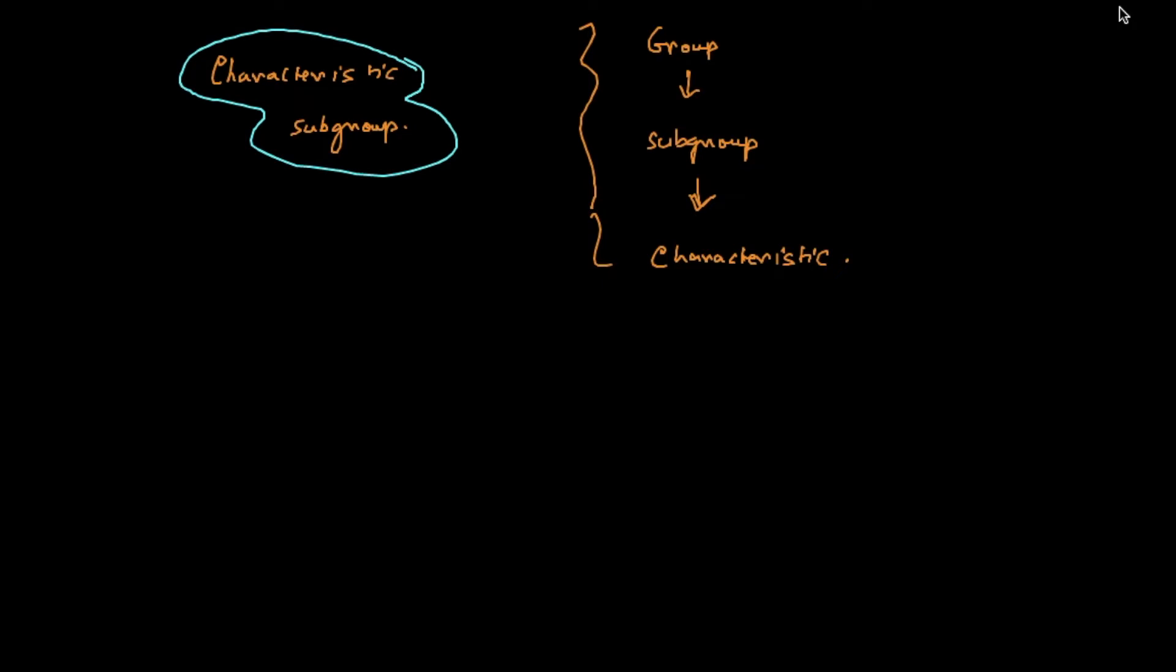Suppose we have a group G and we consider all the maps of the group to itself. These are special maps, let's call them phi. It is a special map from a group to itself called an automorphism. We will come back to that definition. For the moment, let's pretend we know what an automorphism is - it's a special type of map from a group to itself.